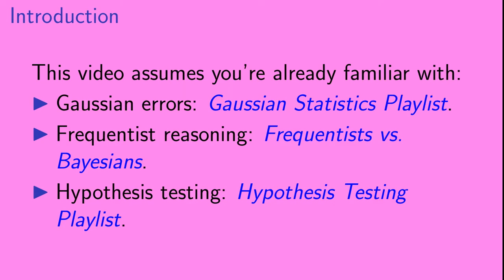There are a few concepts already covered on this channel that will be helpful for understanding this video. Although we will give a very quick review here, it will be useful if you're already familiar with the concept of Gaussian errors — for more information you can consult the Gaussian statistics playlist. The confidence interval is a concept from frequentist statistics; if you'd like to know more you can check out the video 'Frequentists vs. Bayesians.' You might also want to check out the Hypothesis Testing playlist.